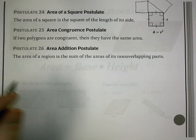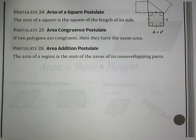Postulate 25 says the area congruence postulate. If two polygons are congruent, then they have the same area. So if we have congruent shapes, areas will be the same.